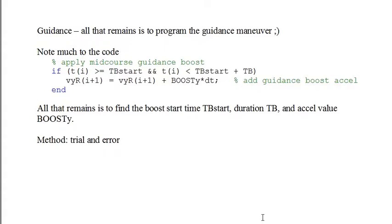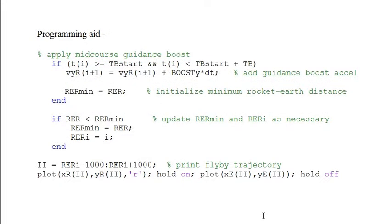The primary problem of the assignment is determining the guidance boost parameters, and that will be aided if we keep track of the minimum distance between the rocket and the Earth. So we add a little code to do that. We initialize the minimum distance when we do the guidance maneuver because we don't want to initialize before that, and then following the guidance maneuver, whenever we calculate the distance between the Earth and the Moon, we update the minimum distance if the calculated distance is less than the minimum distance thus far, and we also keep track of the time index so that we can graph the trajectory near the point of closest contact.